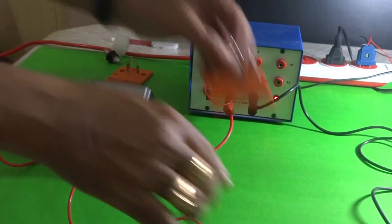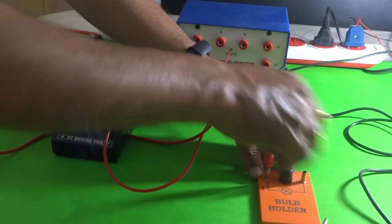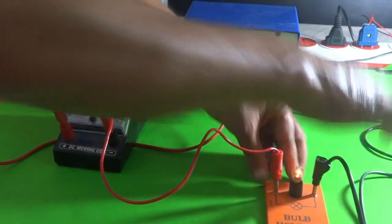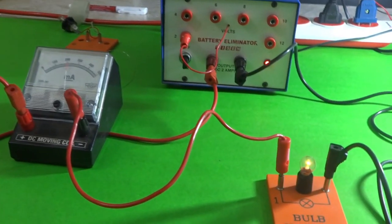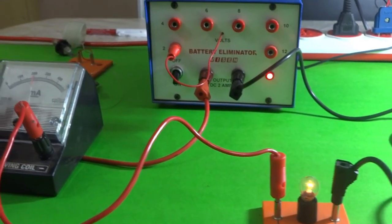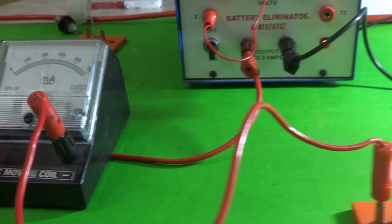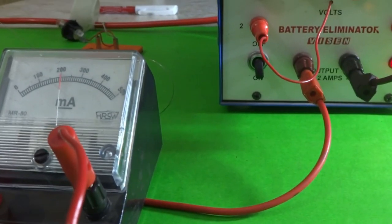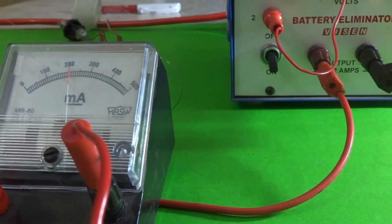Let us fill this gap with this bulb. Now you can see the bulb glows and the reading that is obtained in milliammeter is around 210.